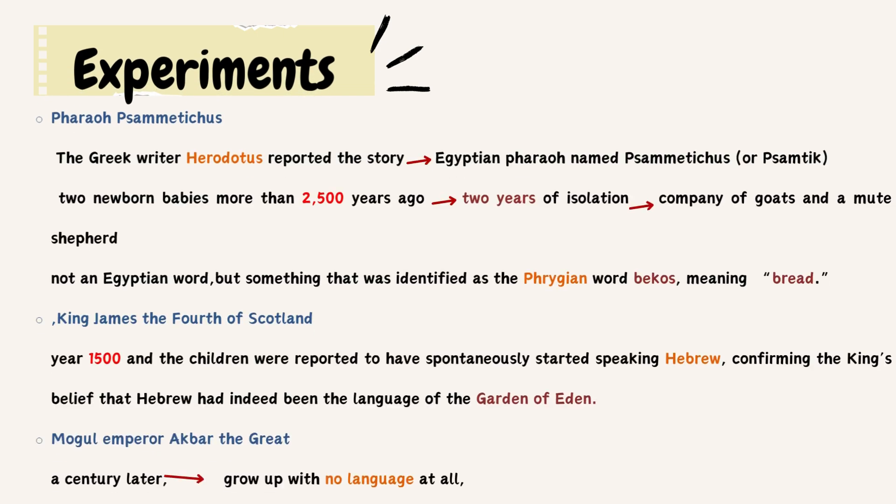The Greek writer Herodotus reported the story of an Egyptian Pharaoh named Psammetichus, who tried an experiment with two newborn babies more than 2,500 years ago. After two years of isolation, with only the company of goats and a mute shepherd, the children were reported to have spontaneously uttered not an Egyptian word but something identified as the Phrygian word 'bekos,' meaning bread. The Pharaoh concluded that Phrygian — an older language spoken in what is modern Turkey — must be the original language. However, several commentators have pointed out that the children must have heard what the goats were saying.